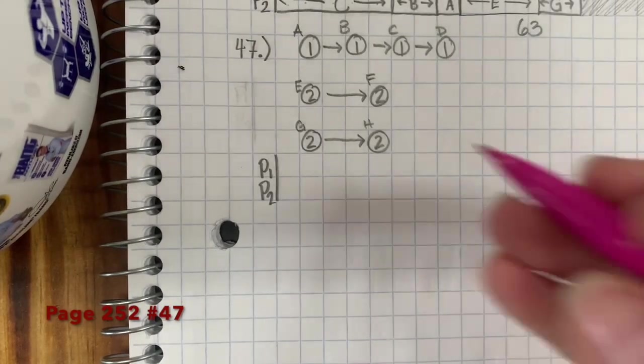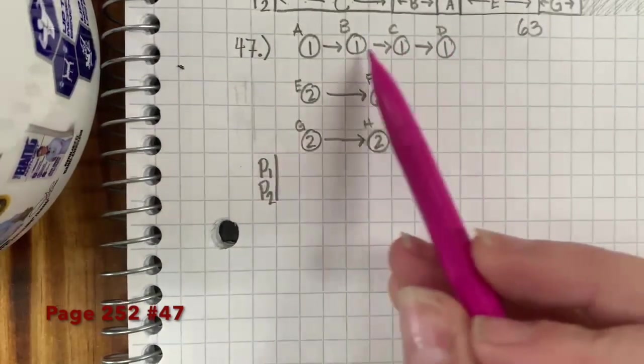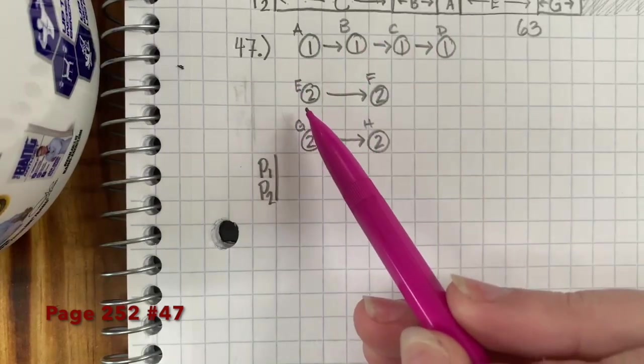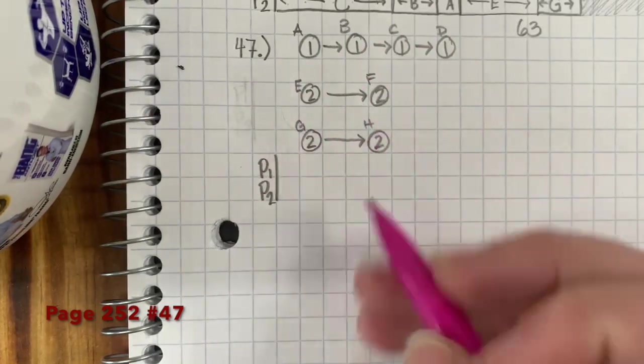Okay, here is 47. So I already drew out what the book already has in it. I wanted to draw it out so that I could cross stuff off.